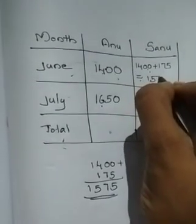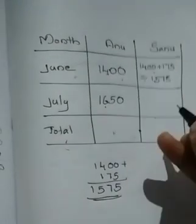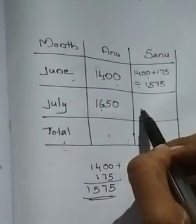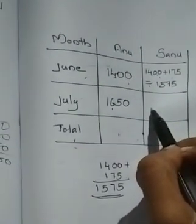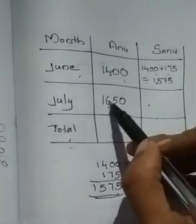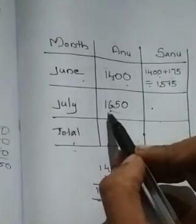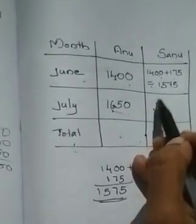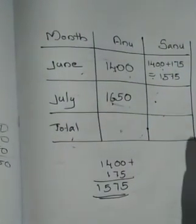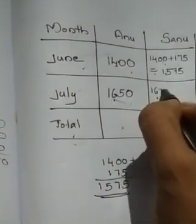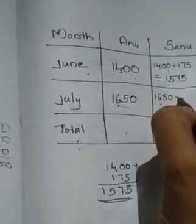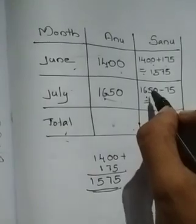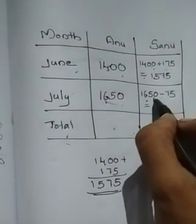Write here: 1,575 rupees. How much is Sanu's deposit in the month of July? What is the clue given? 75 rupees less than Anu's deposit. What is Anu's deposit? 1,650. Sanu's deposit is 75 less. That means how can we find it? 1,650 minus 75. Do you know how to subtract 75 from 1,650? You can do it in your mind also.